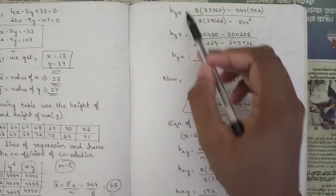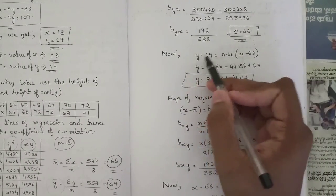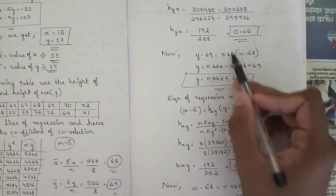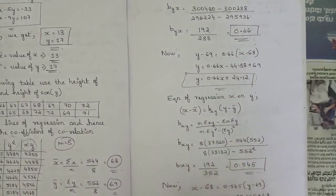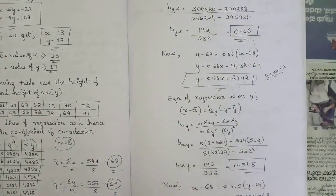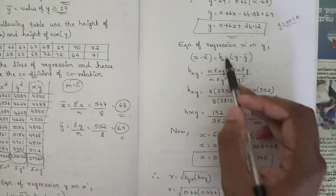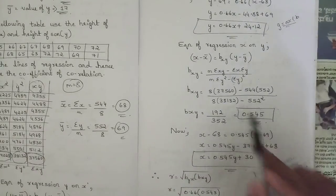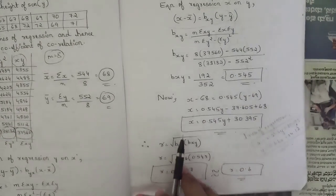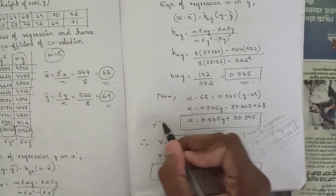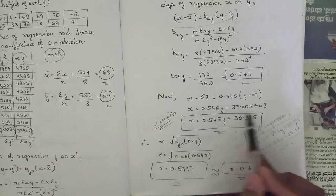Calculating byx using the formula, we get byx = 0.66. Substituting into the regression equation: y − 69 = 0.66(x − 68), which gives the regression line of y on x. For the regression line of x on y, calculate bxy using its formula and get bxy = 0.545. Substituting: x − 68 = 0.545(y − 69), giving x = 0.5445y + 30.395.